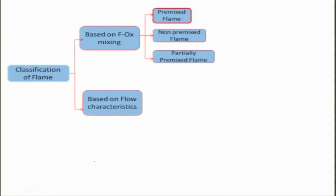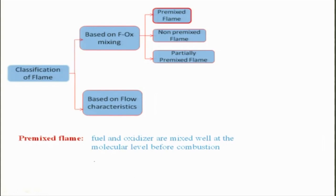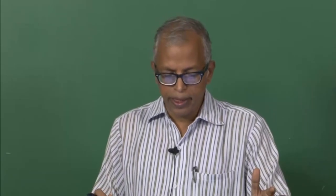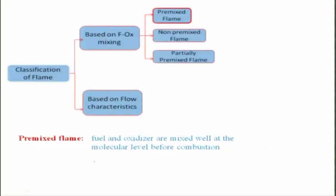What do you mean by a premixed flame? From the name itself — when the fuel and oxidizer are premixed before combustion takes place, we call it a premixed flame. The fuel and oxidizer are mixed well at the molecular level. The example you might know is the Bunsen flame. It was Bunsen who made premixed flame into existence; otherwise most flames in nature are basically diffusion flames. The man-made premixed flame has good properties and also certain bad properties.